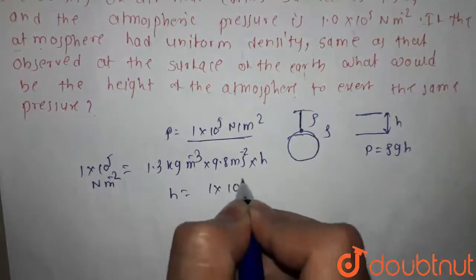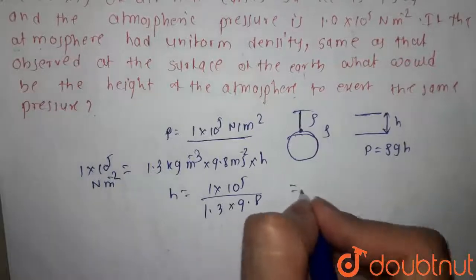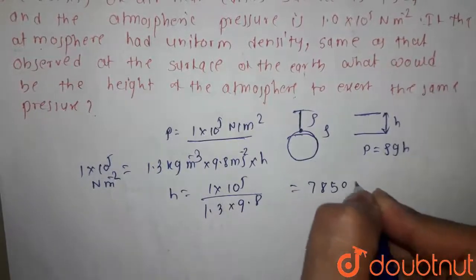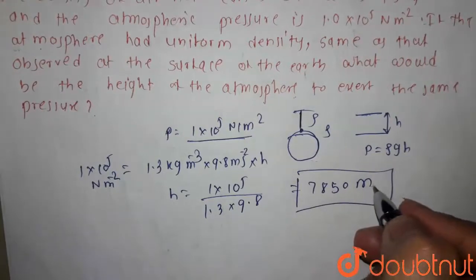h equals to 1 into 10 to the power 5 by 1.3 into 9.8. So, this is 7,850 meter. What is your answer? 7,850 meter.